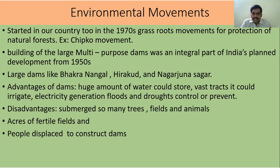Building large multi-purpose dams was an integral part of India's planned development from the 1950s. Under the five-year plans, construction of multi-purpose dams was prioritized for development of agriculture to produce more food grains. When constructing multi-purpose dams, thousands of acres of land are needed, and many villages have to evacuate from their native places or may submerge in the backwater of dams like Nagarjunasagar Dam, Bhakra Nangal Dam, and Hirakud Dam — major multi-purpose dams in India.